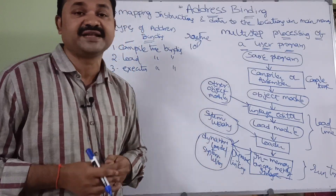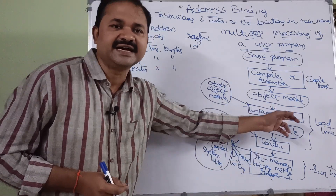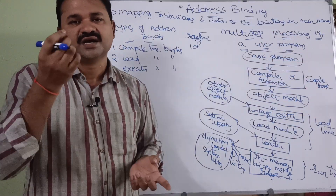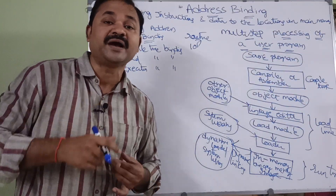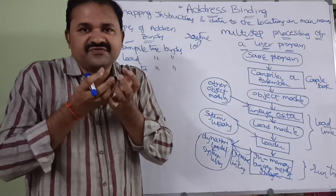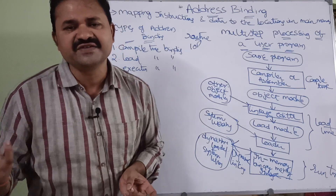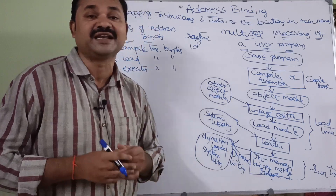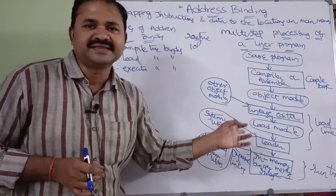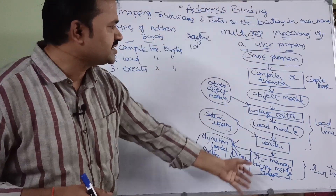Next we have dynamic linking. We have already seen the linker, which performs static linking — linking all object files and generating an executable file during compilation. After compilation, if we remodify the program and recompile it, we perform dynamic linking. Dynamic linking also links several object files, but this linking is done during runtime or execution time. This covers the different steps of processing a user program.